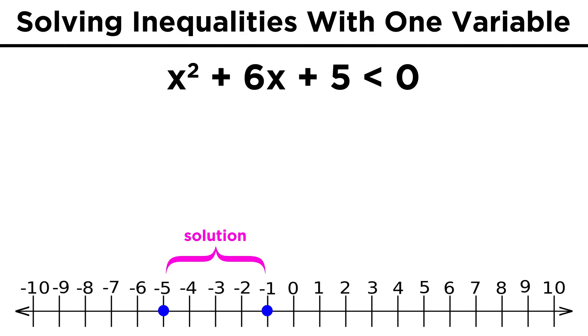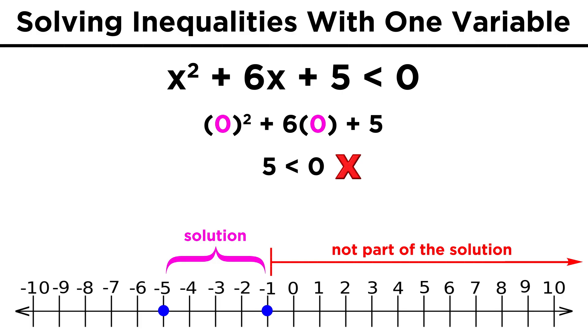Now let's move over to the right. Zero is always an easy one to try, so let's use that. Zero plus zero plus five is five, which is not less than zero, so from negative one to positive infinity, these values don't work. Trying the other side, let's use negative six. Thirty-six plus negative thirty-six gives us zero, plus five is five, so none of these values work.